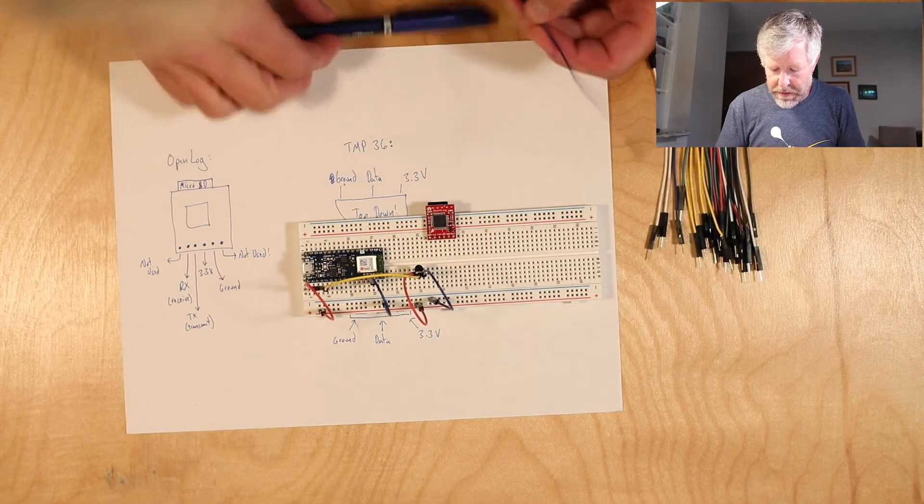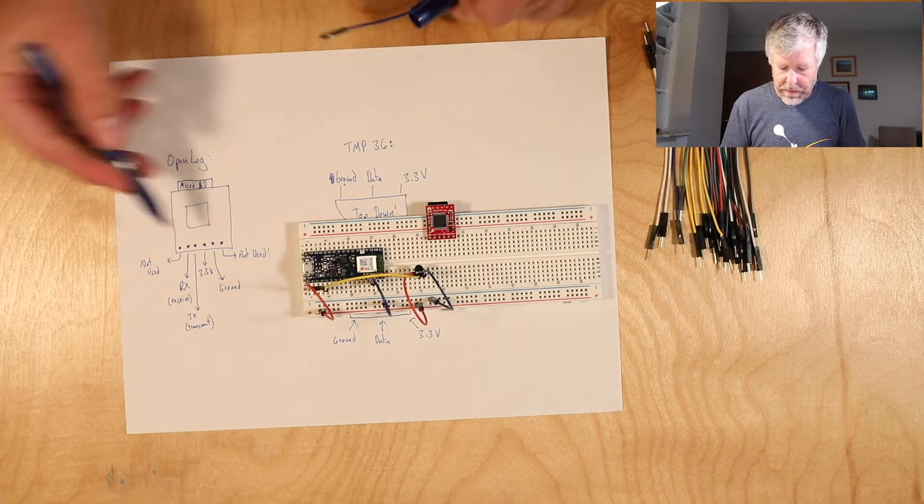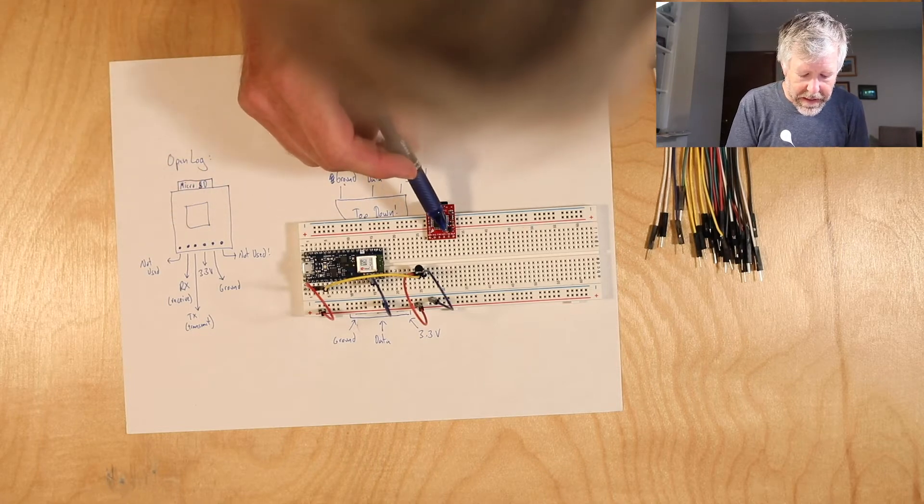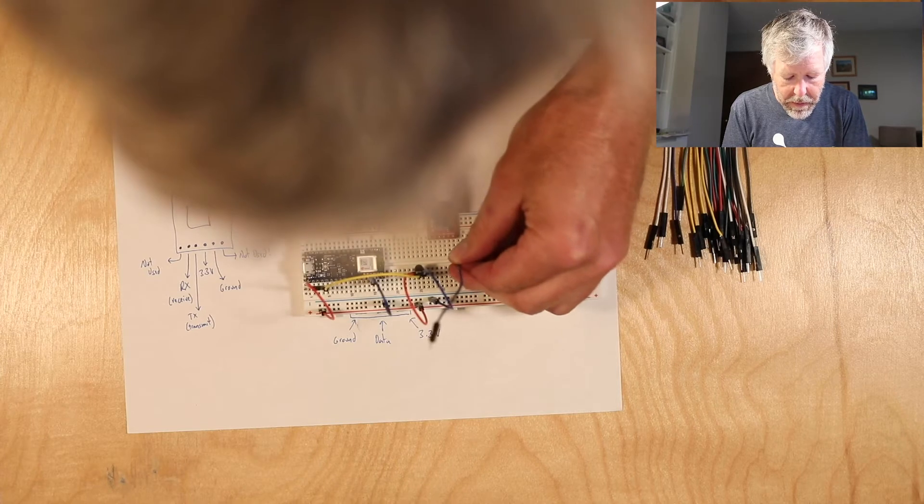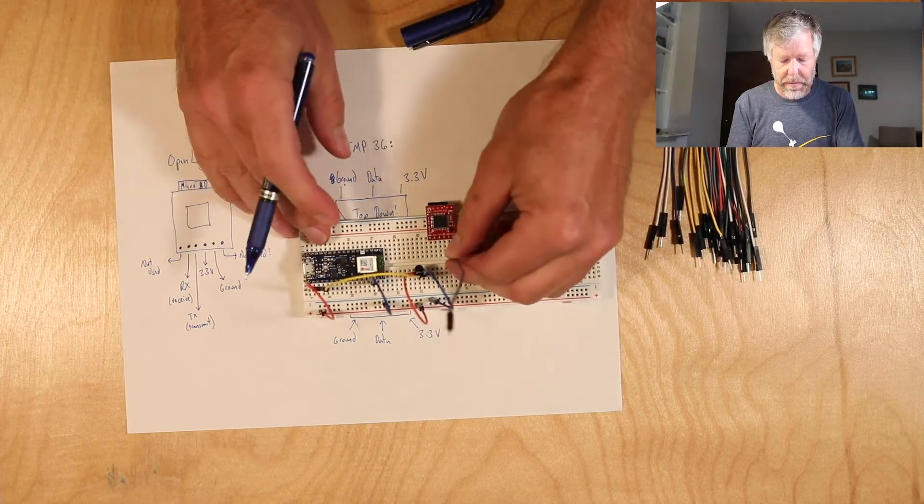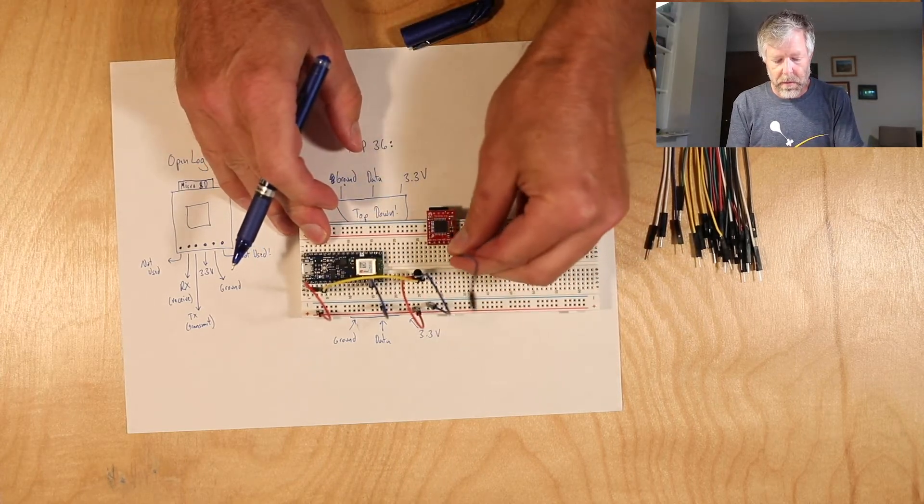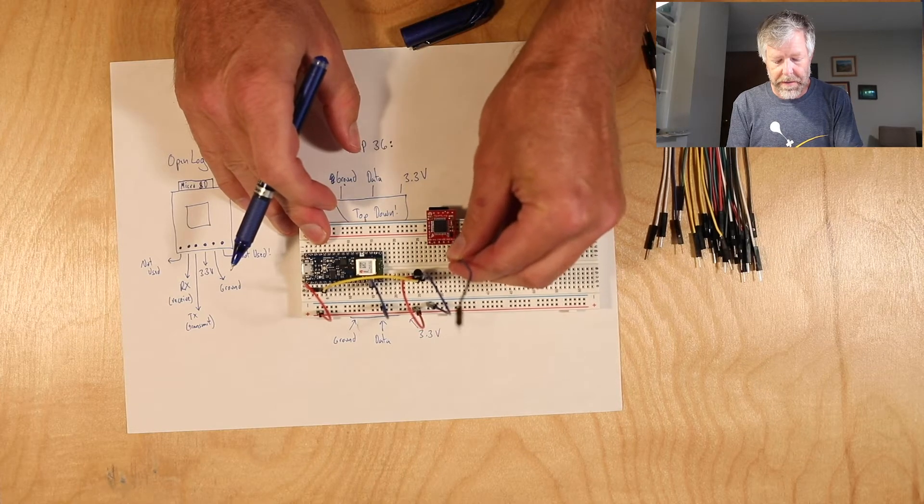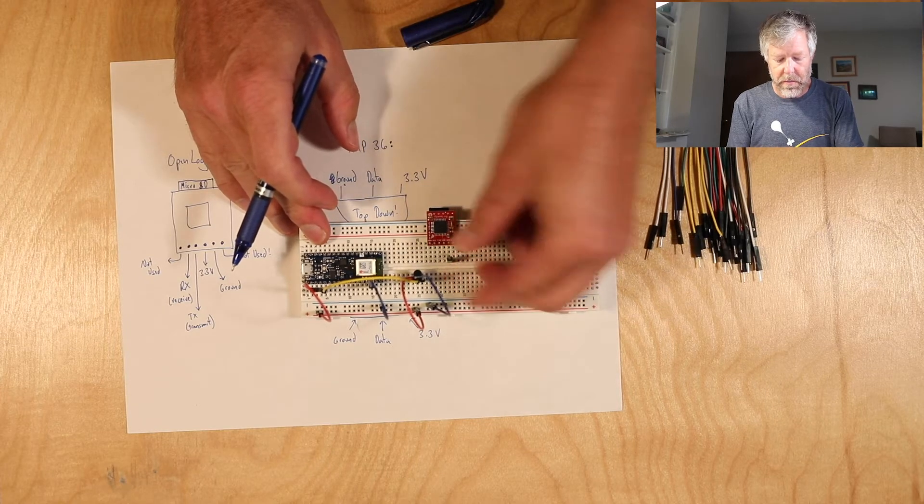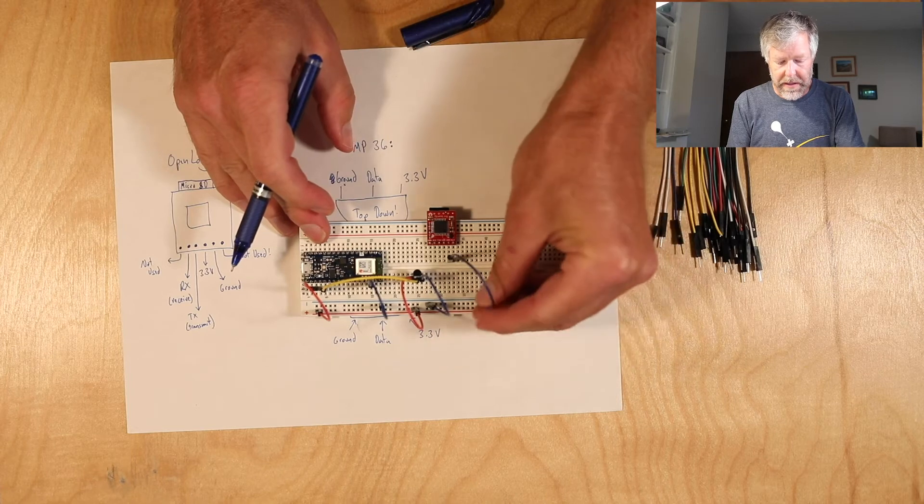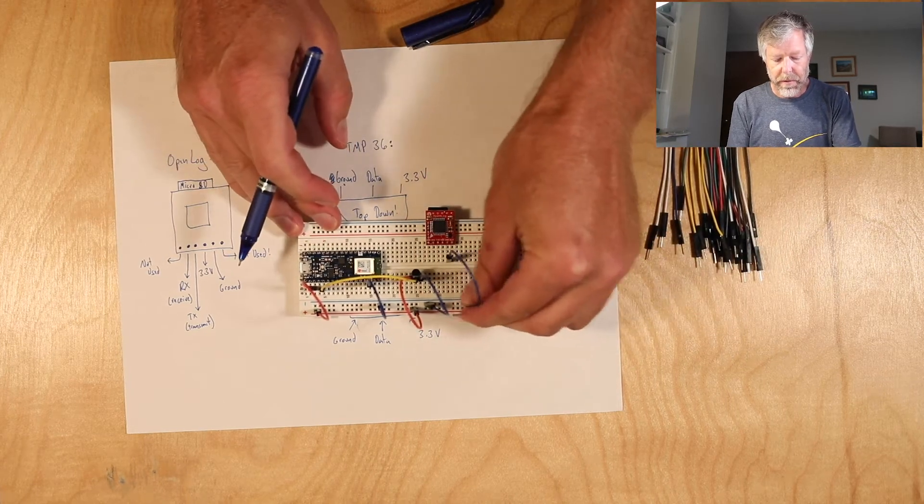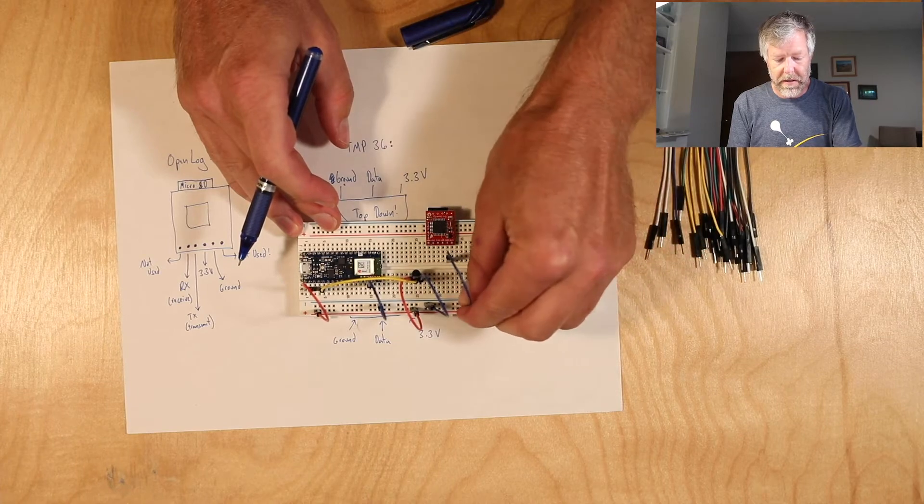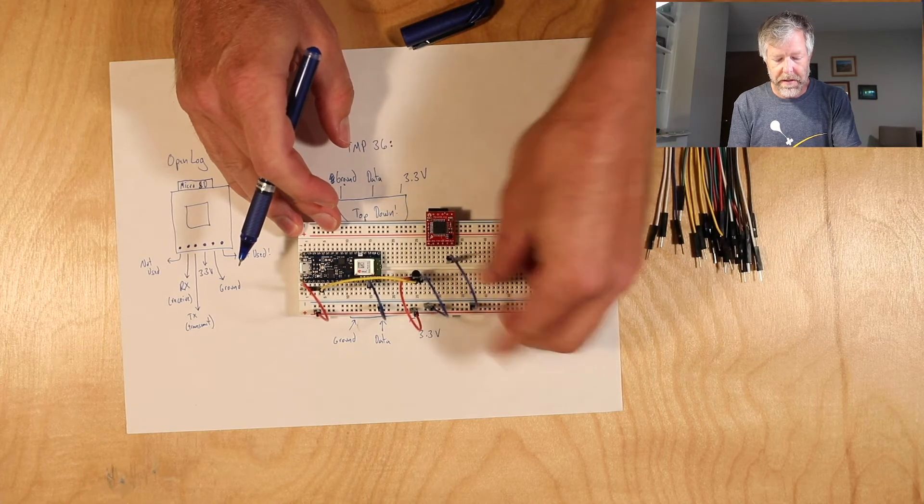So we hook up the ground, which is the second pin here. We plug that in there, and once again, it doesn't matter whether we plug it in there or here or wherever, anywhere along this line works just fine. So we're going to plug that in there. Once again, we could plug it in anywhere we want along here.